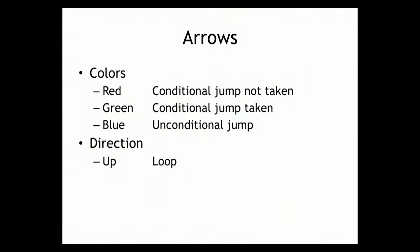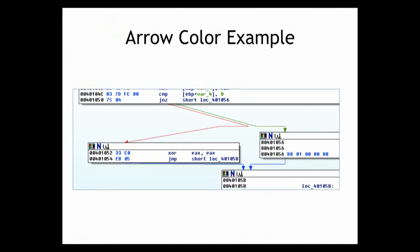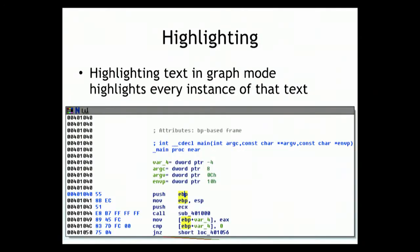In graph mode, red means a conditional jump that is not taken, green is the one taken, and blue is an unconditional jump. An arrow pointing up means a loop — something's going to happen over and over again. So you have not-taken (red), taken (green), and unconditional (blue). You'll see upward arrows occasionally when code repeats in a loop.